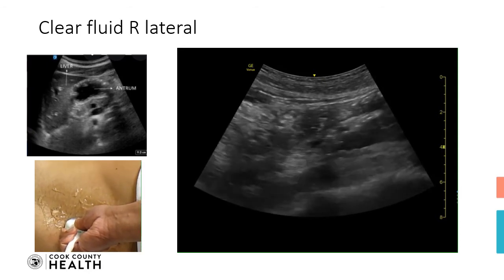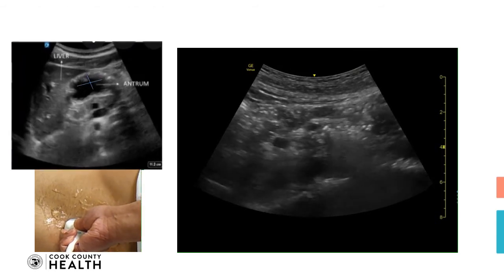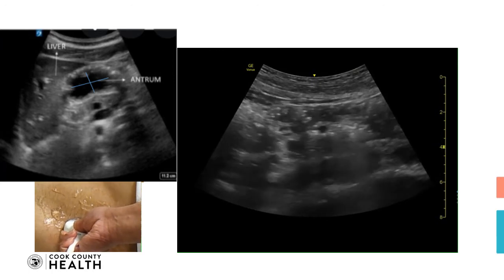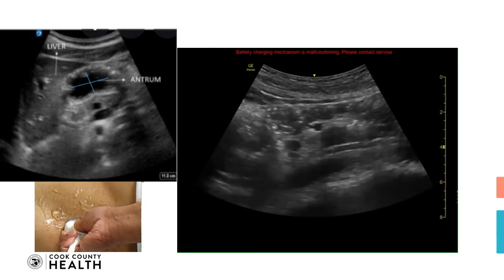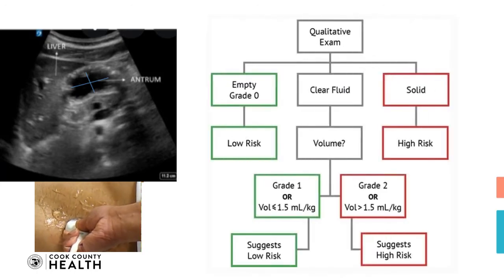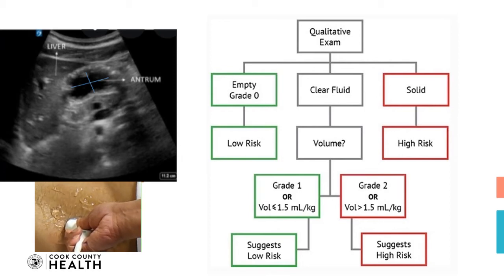Now, how do you do the measurements? You need to measure the cross-sectional area of the antrum — you measure the diameter of the antrum, then the opposite diameter, and use a formula. Or you can refer to a table that will directly give you the volume of the liquid the patient has in their antrum. If the volume of liquid is more than 1.5 milliliters per kilogram, it is a contraindication for anesthesia. The volume should be less than 1.5 milliliters per kilogram for any age or sex of the patient.